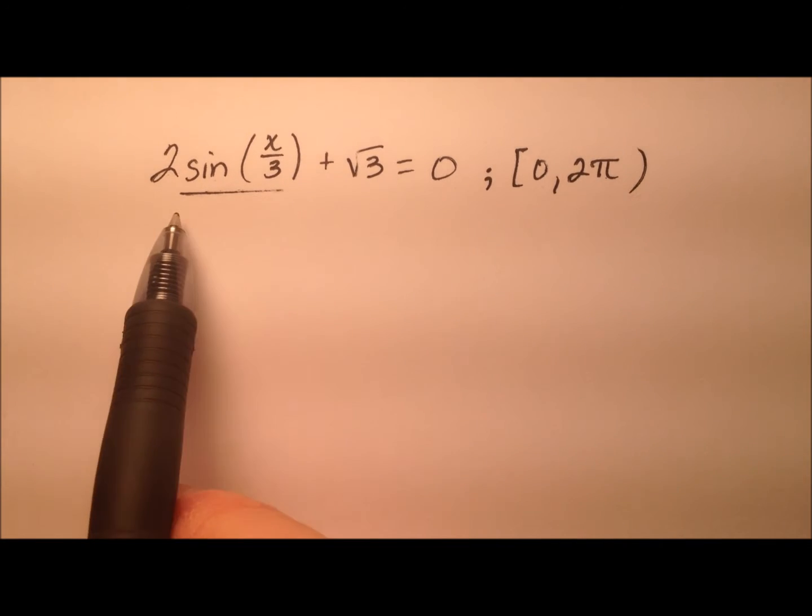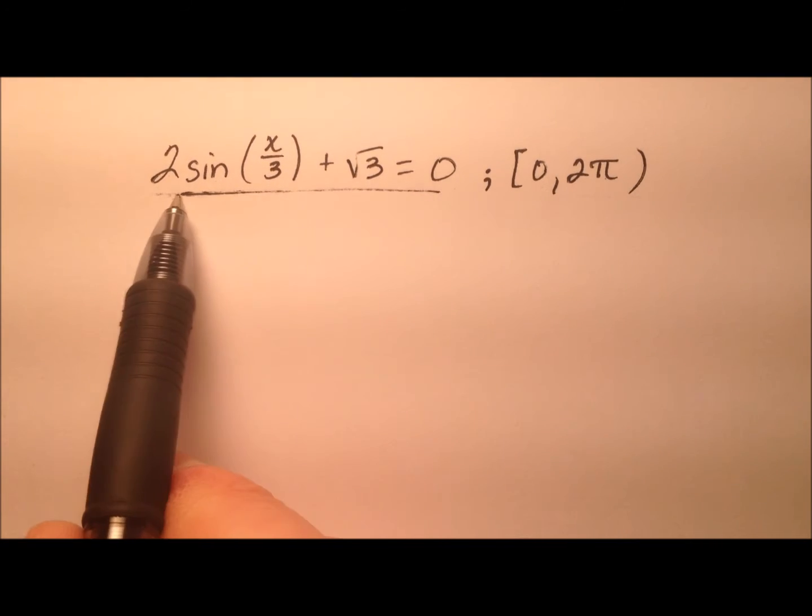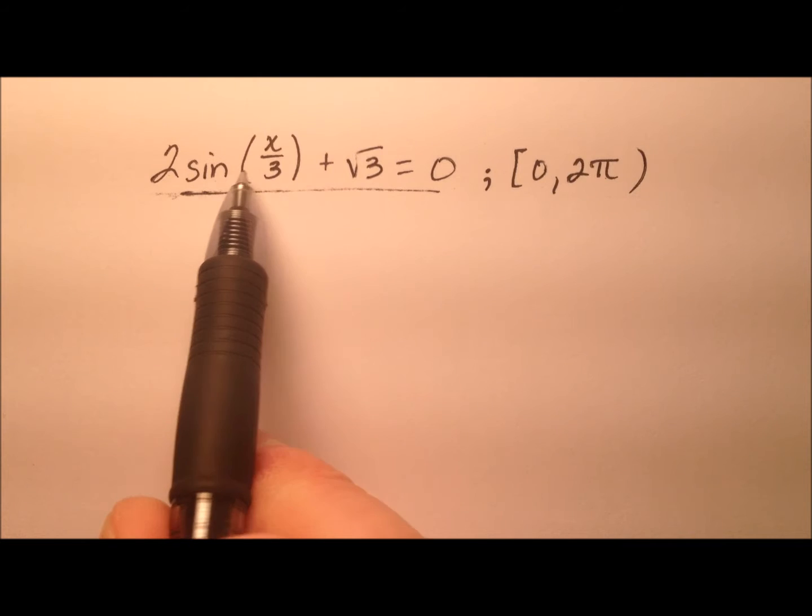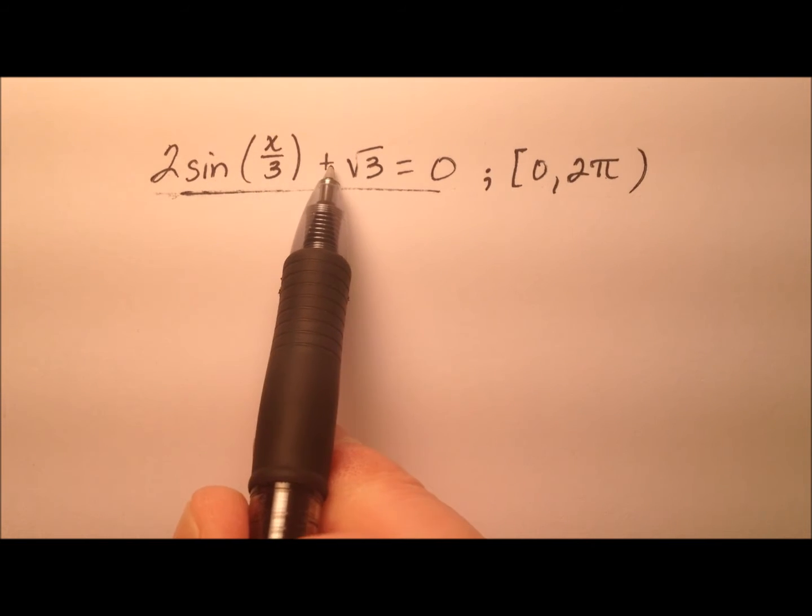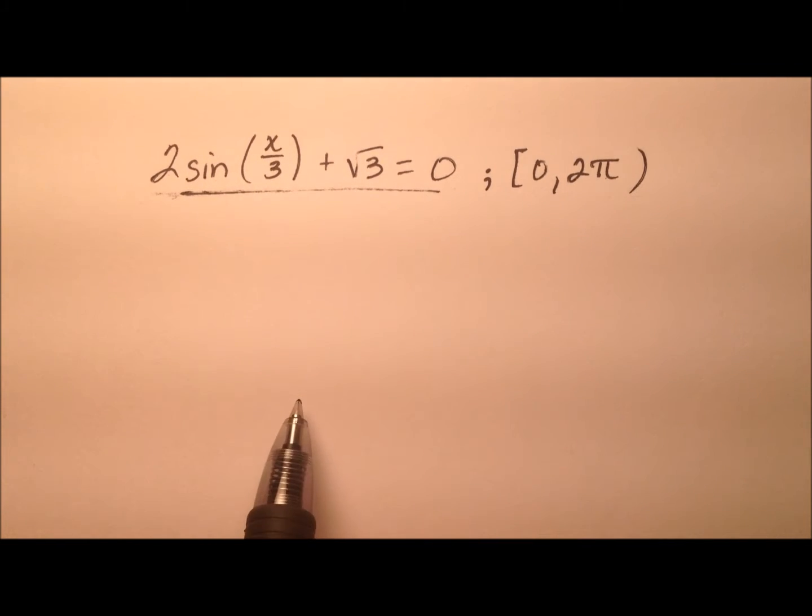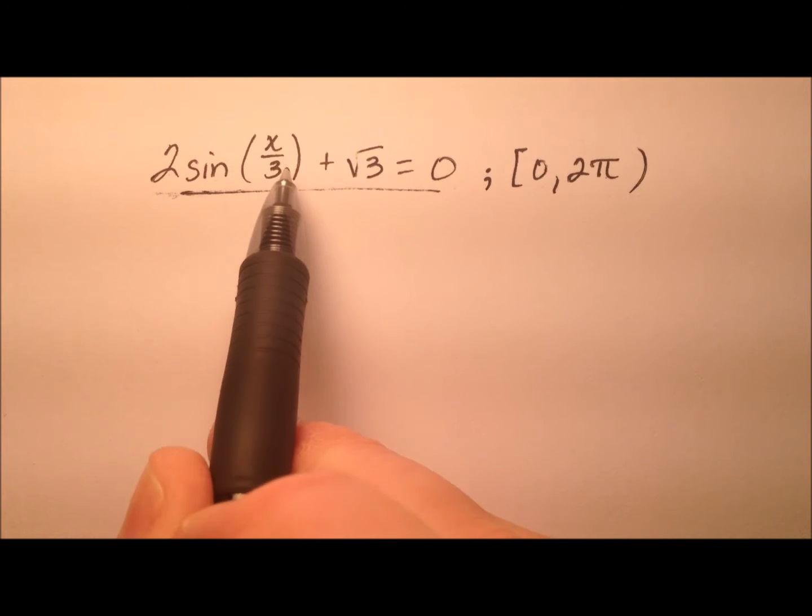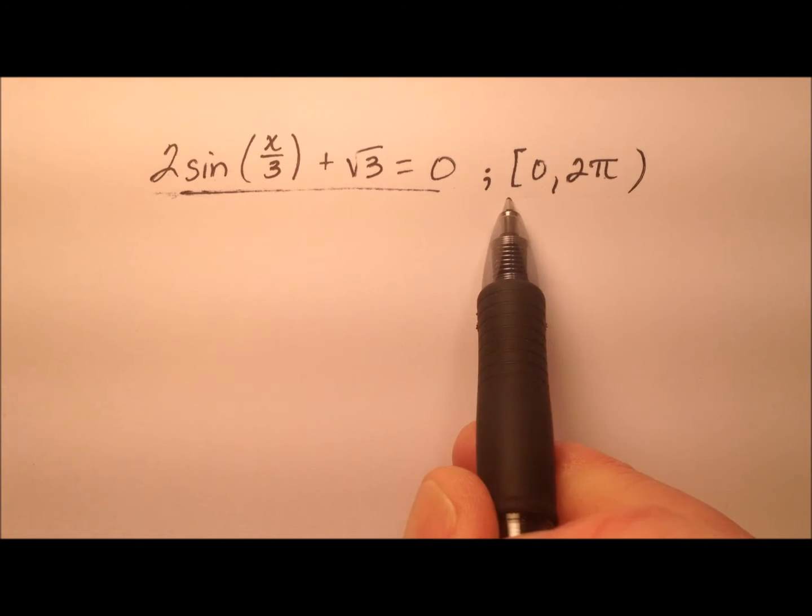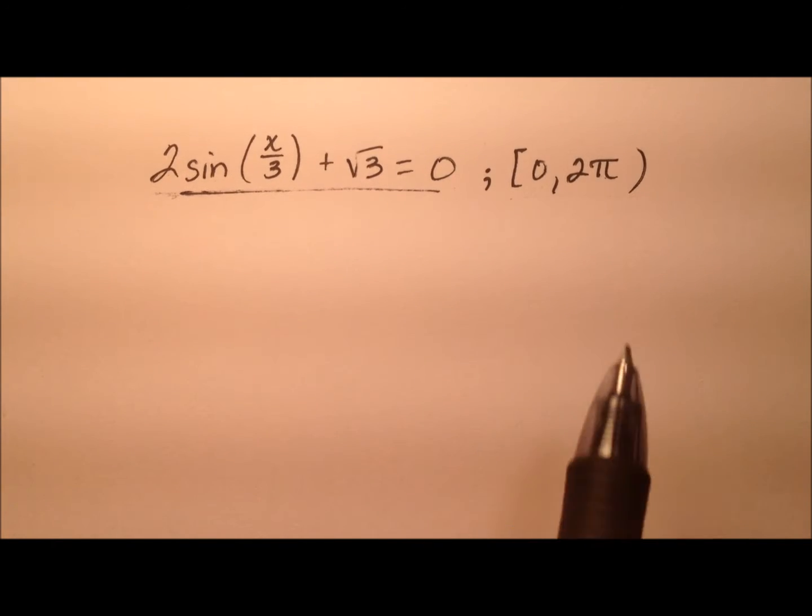In this example, we're going to take a look at this trigonometric equation. We have 2 sine of x over 3, and then we're going to add to that the square root of 3 and get 0. And the value of x that we're solving for needs to be in this interval 0 to 2 pi, and this also tells us it needs to be in radians.